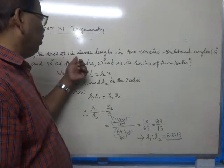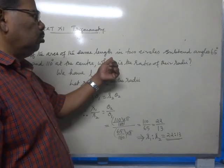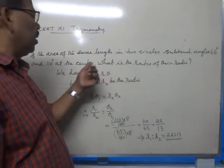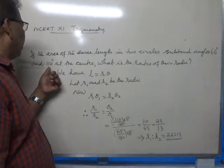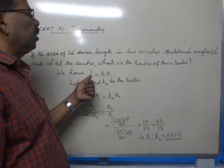If the arcs of the same length in two circles subtend angles 65 degrees and 110 degrees at the center, what is the ratio of their radii?